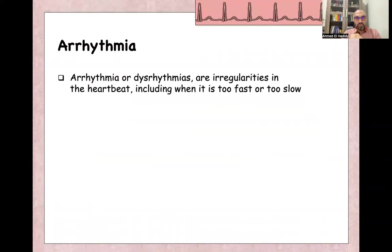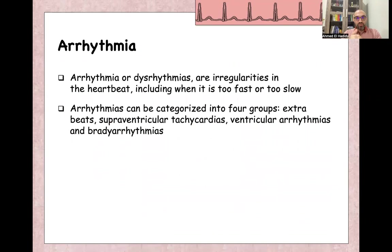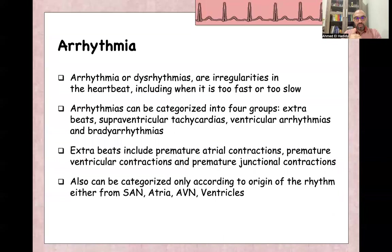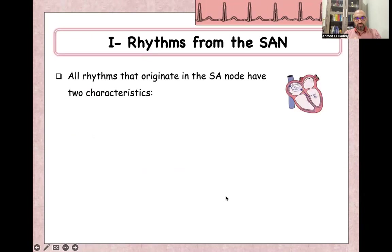Arrhythmia or dysrhythmia are irregularities in heartbeat, and this includes too fast or too slow beats. Arrhythmia can be categorized into four categories: extra beats, supraventricular tachycardia, ventricular arrhythmia, and bradyarrhythmia. Extra beats include premature atrial contractions, premature ventricular contractions, and premature junctional contractions. They can also be categorized according to the origin of the arrhythmia — either from the SA node, atria, AV node, or from the ventricles.